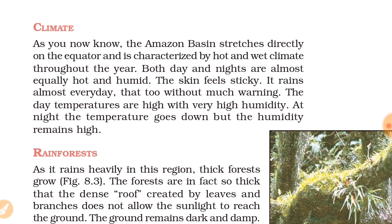The Amazon River Basin stretches along the equator. The climate is very hot and wet throughout the year - it is warm, and the rain is almost constantly present. Both day and night are equally humid. It is warm at night too. Humidity means the weather feels moist and sticky because of the rain and warm sunlight. There is almost daily rain with no warning.